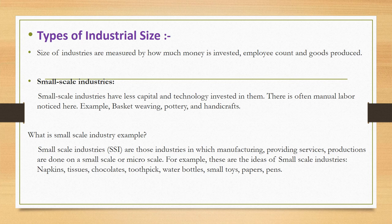Types of industrial size: the size of industries is measured by the amount of money invested, employee count, and goods produced. Small-scale industries have less capital and technology invested in them, and there is often manual labor involved. Examples include basket weaving, pottery, and handicrafts. Small-scale industries are those in which manufacturing, providing services, and production are done on a small or micro scale. Other examples of small-scale industry products include napkins, tissues, chocolates, toothpicks, water bottles, small toys, paper, and paints.